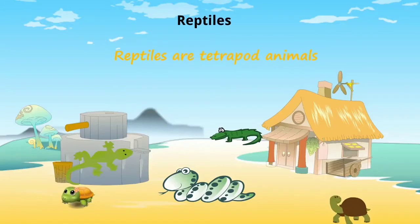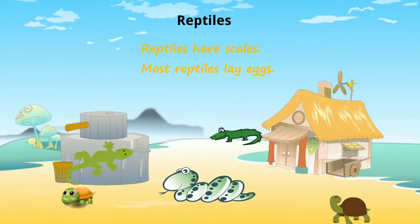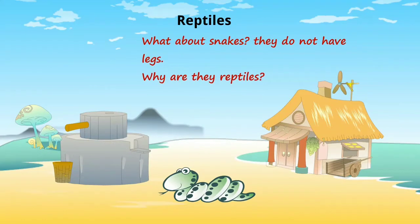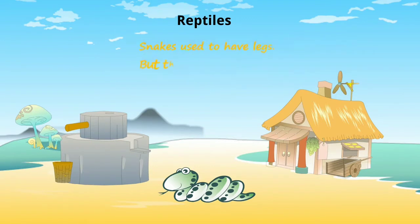Reptiles are tetrapod animals. Reptiles have scales, most reptiles lay eggs, and they breathe through lungs. What about snakes? They do not have legs — why are they reptiles? Snakes used to have legs, but the genes to grow limbs still exist.